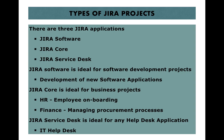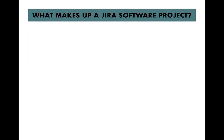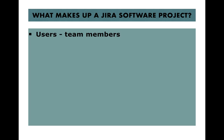Now let's look at what makes up a Jira Software project — its key components. First is users: the team members within the project. Second is issues: as discussed, a project is a combination of issues, which is the key thing that makes up a software project.